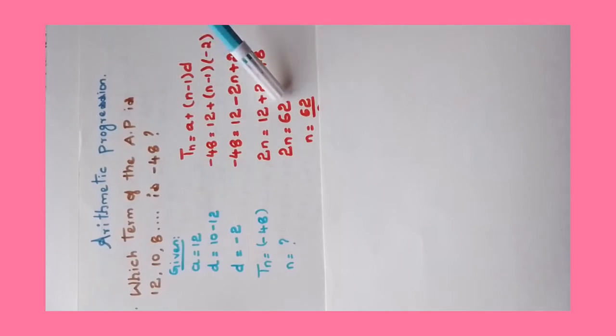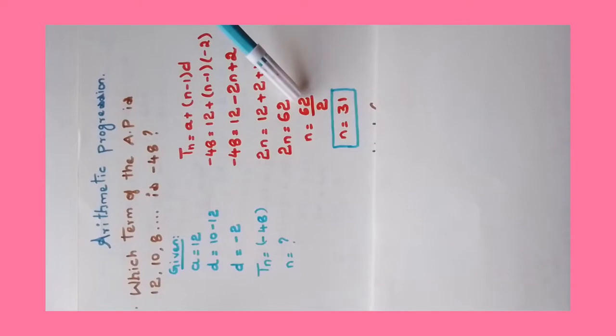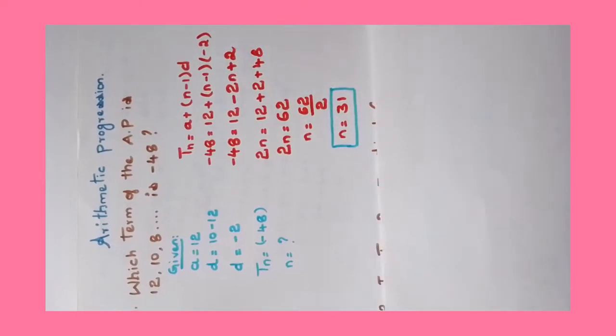Shift -2n this side: 12 + 2 + 48. Add them up, gives 62. 2n = 62, therefore n = 62 ÷ 2. 2 ones are 2, 30 ones are 62, therefore n = 31. Clear? We shall move to another sum.